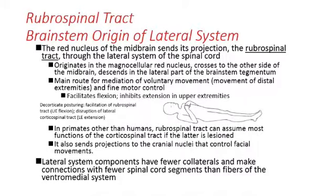At the same time, decorticate posturing disrupts the corticospinal tract, which is associated with more of the lower extremity extensions. This is a very bad sign, suggesting a serious problem. The transition from decorticate to decerebrate posturing is associated with massive swelling of the brain, often seen in brain trauma.